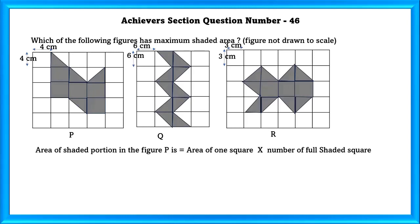Let's start with figure P. In figure P, there are 5 filled shaded squares and 4 half shaded, which we can take as 2 filled shaded squares. If we add them up, we'll get 7. So, the area of shaded portion in figure P is equal to 112 square centimeters.